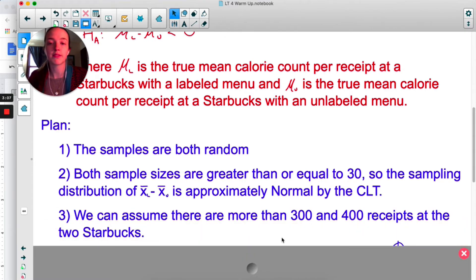For the plan step, same three conditions as always. Both the samples were random—it said that in the problem. Both sample sizes were greater than or equal to 30, so the sampling distribution of the difference of those x̄'s is approximately normal by the CLT. Now if those sample sizes were small, we would need to see the data and check to make sure there was no skewness or outliers. Luckily they're both over 30, so we're fine. And then we can assume there are more than 300 and 400 receipts at those two Starbucks. So notice I am checking the conditions for both samples, both Starbucks.